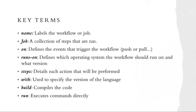There are a few key terms to be familiar with in GitHub Actions. 'Name' labels the workflow or job. A 'job' is a collection of steps or tasks to run. 'On' defines the trigger — establishing what event the workflow reacts to, such as a push or pull. Within the job, 'steps' list the tasks to be performed. 'With' specifies the version of the programming language to use. 'Build' is used to compile the code, and 'run' executes the commands responding to that event.